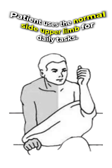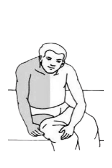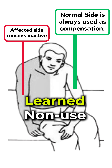As a result, the patient starts making compensatory changes and utilizes the stronger side upper limb to carry out day-to-day activities. This compensatory behavioral adaptation — learning not to use the weaker side and instead compensating by using the stronger side — is called learned non-use.